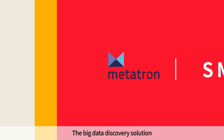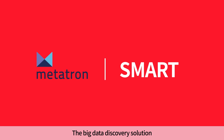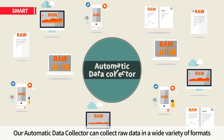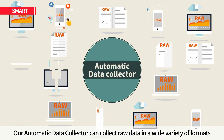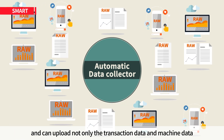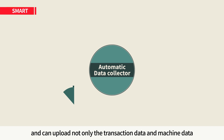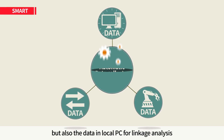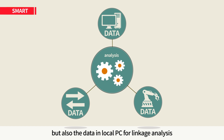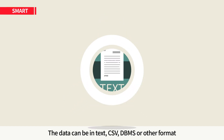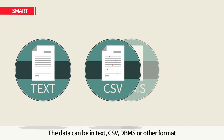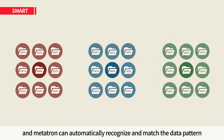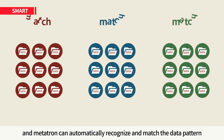The big data discovery solution. Metatron is smart. Our automatic data collector can collect raw data in a wide variety of formats and can upload not only the transaction data and machine data, but also the data in local PC for linkage analysis. The data can be in text, CSV, DBMS, or other format, and Metatron can automatically recognize and match the data pattern.